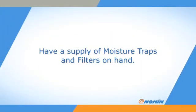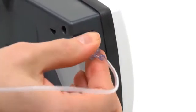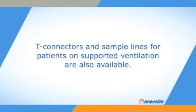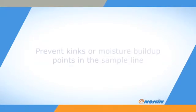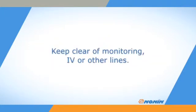Have a supply of replacement moisture traps and filters on hand. Three sizes of nasal cannula are available for adult, pediatric, and infant use. Place the nasal cannula and snugly attach the sample line to the moisture trap using the luer lock stem on the trap. T-connectors and sample lines for patients on supported ventilation are also available. We also recommend using Nafion tubing for ventilated patients receiving added humidification to reduce moisture buildup. Proper sample line placement and routing help prevent kinking, occlusions, or moisture buildup. Keep the sample line clear of monitoring, IV, or other lines attached to the patient.